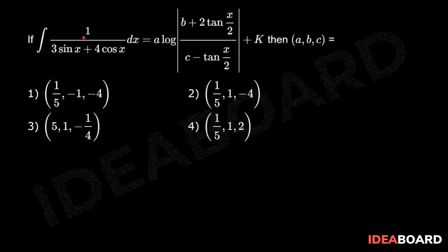If integration of 1 by 3 sin x plus 4 cos x dx equals a into log of modulus of b plus 2 tan(x/2) divided by c minus tan(x/2) plus k, then find a, b, c.